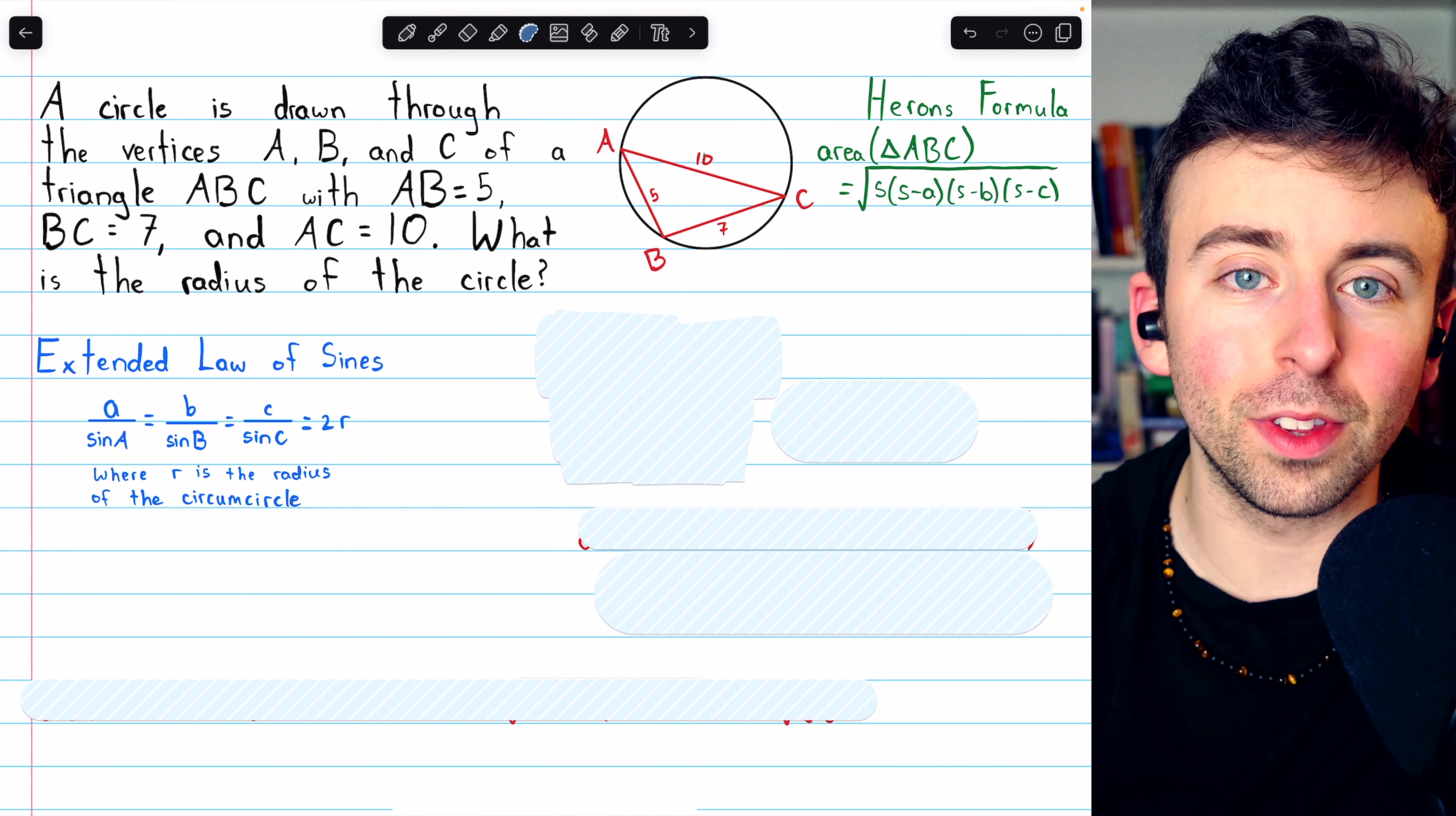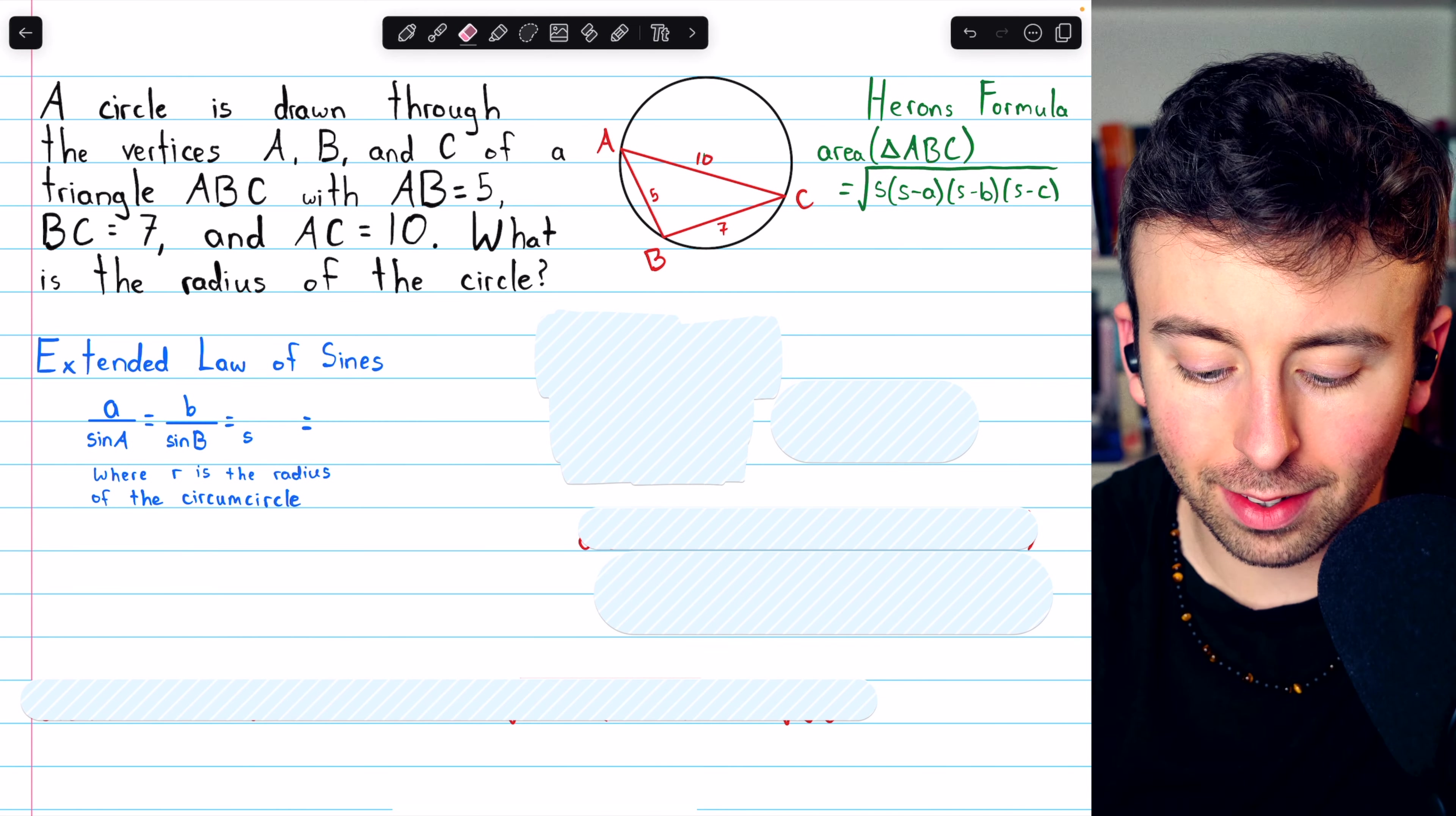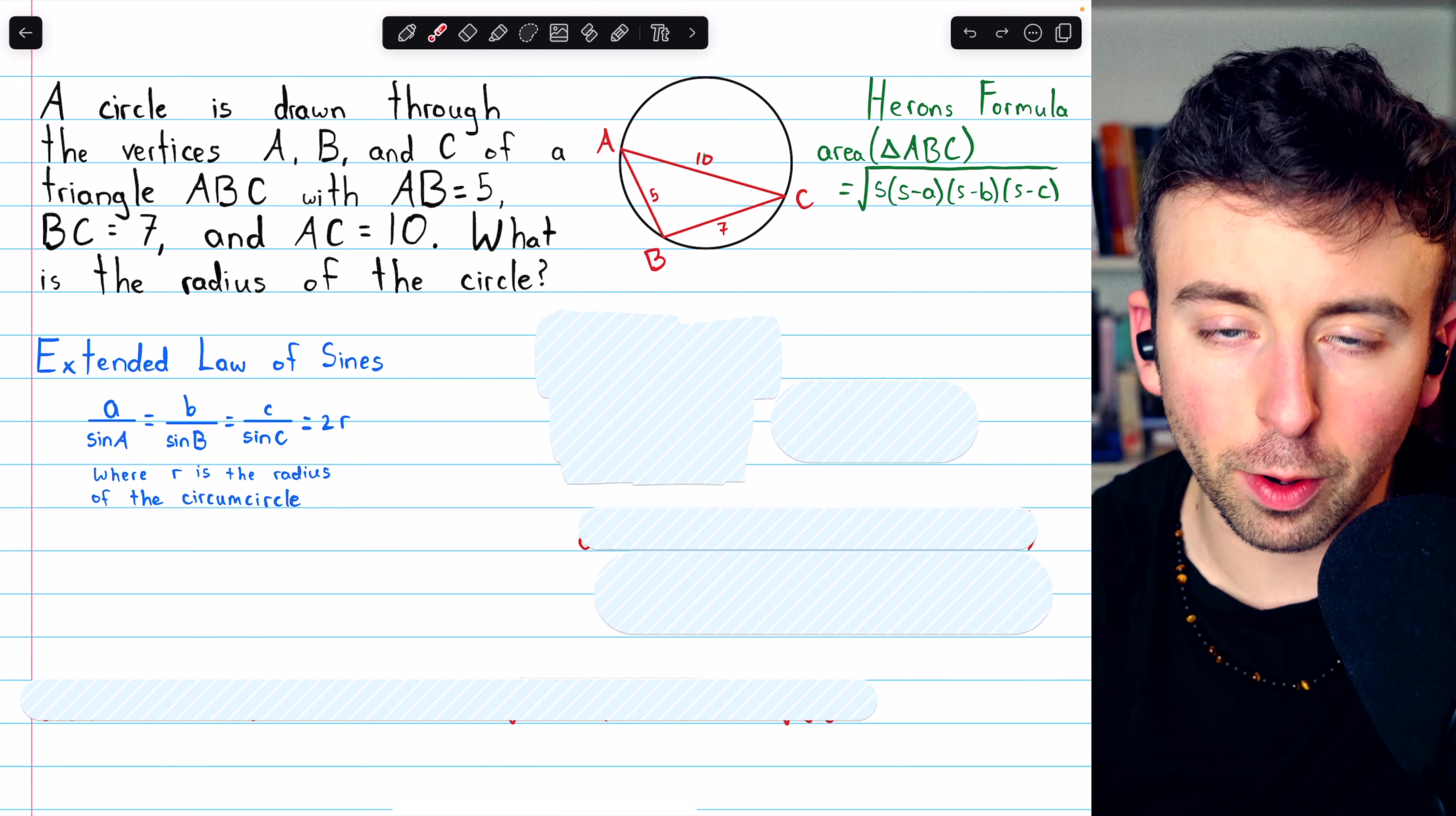Let's get into the solution. First, let's take this last part of the extended law of sines, C over sine C equals 2R, and let's just solve that for R.